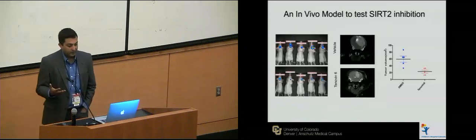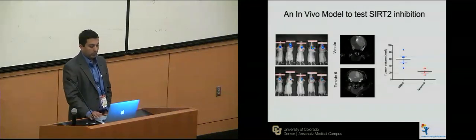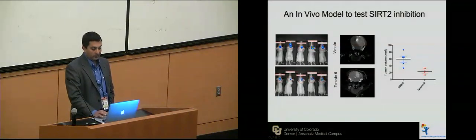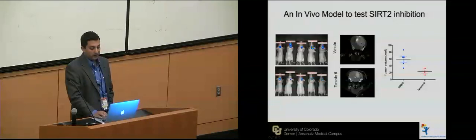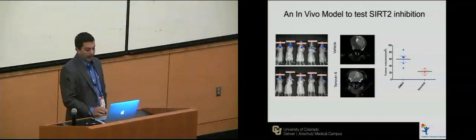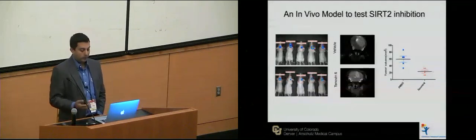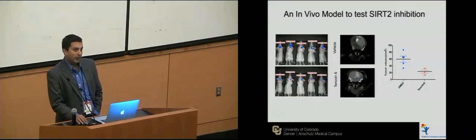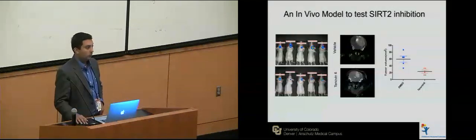We developed in vivo models using an orthotopic model of ATRT cells grown in mouse cerebellum. With vehicle treatment, you see a nice large tumor on MRI. With tenovin-6 treatment in vivo, the tumor is significantly smaller. When we harvest these tumors, the tenovin-6 treated tumors are significantly smaller — again suggesting targeting SIRT2 would be valuable.